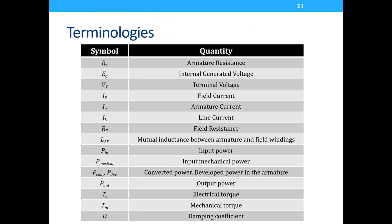Summary of terminologies: RA is armature resistance, EG is internal generated voltage, VT is terminal voltage, IF is field current, IA is armature current, IL is line current, RF is field resistance, LAF is mutual inductance between armature and field. P_in is electrical input power, P_mech_in is mechanical input power, P_conv or P_dev is converted/developed power, P_out is output power. TE is electrical torque, TM is mechanical torque, and D is the damping coefficient.